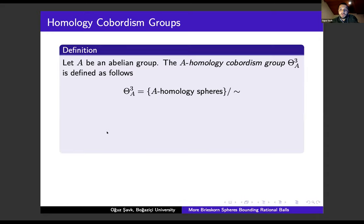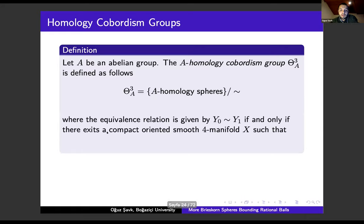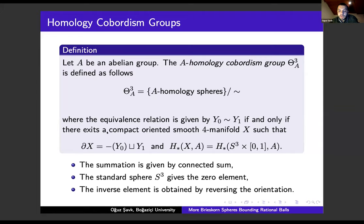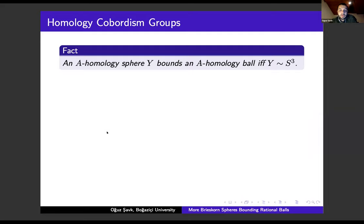This observation of Fintushel and Stern is closely related to the notion of homology cobordism groups. For us, A is an abelian group. The A-homology cobordism group is defined as follows: we take an equivalence relation on the set of A-homology spheres by identifying two spheres if and only if there exists a compact oriented smooth 4-manifold X such that our initial spheres co-bound X and the A-homology of X is the same as the A-homology of the three-dimensional cylinder. The summation of this group is given by the connected sum, the three-dimensional sphere gives our zero element, and the inverse element can be found by taking the orientation reversal.